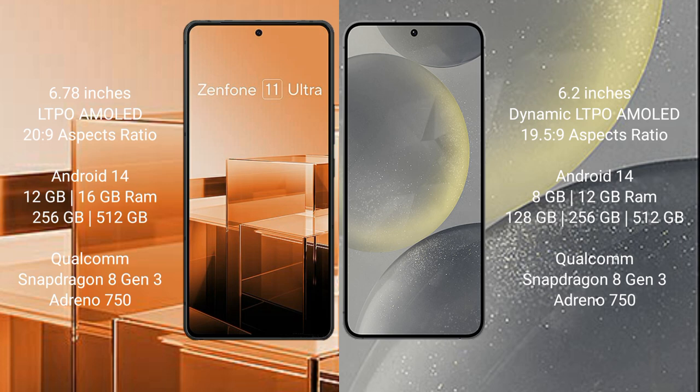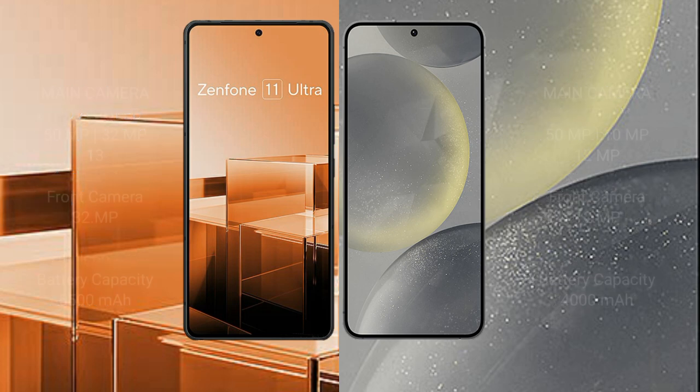Samsung Galaxy S24 comes with 8GB RAM and 128GB, 256GB, or 512GB internal storage, also powered by a Qualcomm Snapdragon 8 Gen 3 processor and Adreno 750 GPU.